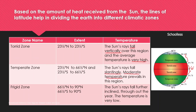The Frigid Zone: rays fall further inclined and the temperature is very low. The extent is 66.5 degrees north to 90 degrees north, and 66.5 degrees south to 90 degrees south.